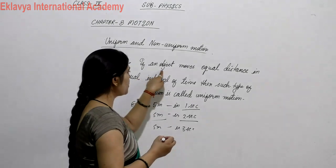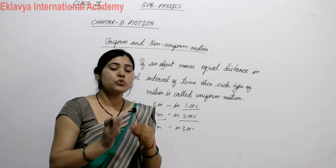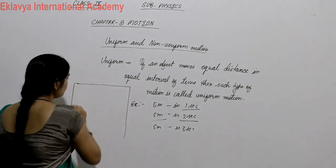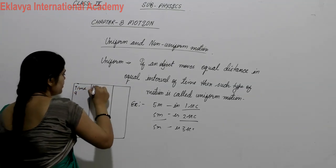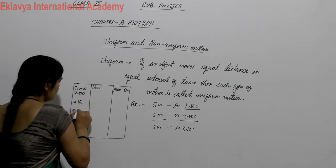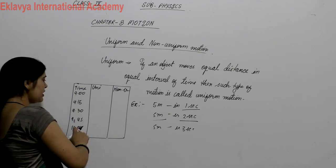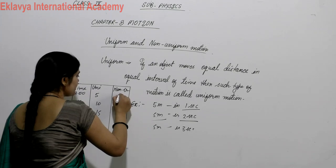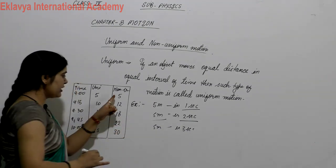For non-uniform motion: if an object moves unequal distances in equal intervals of time, it is called non-uniform motion. Consider a table with time intervals — 9:00, 9:15, 9:30, 9:45, 10:00 — where the time difference is always 15 minutes. If distances covered are 5, 10, 15, 20, 25 — equal — that is uniform motion. But if distances are 5, 12, 18, 22, 30 — unequal — that is non-uniform motion.